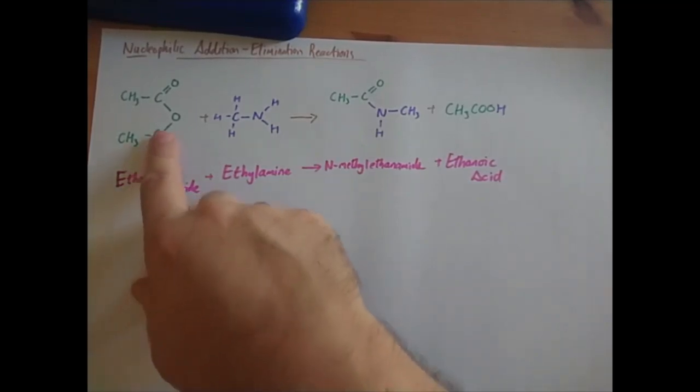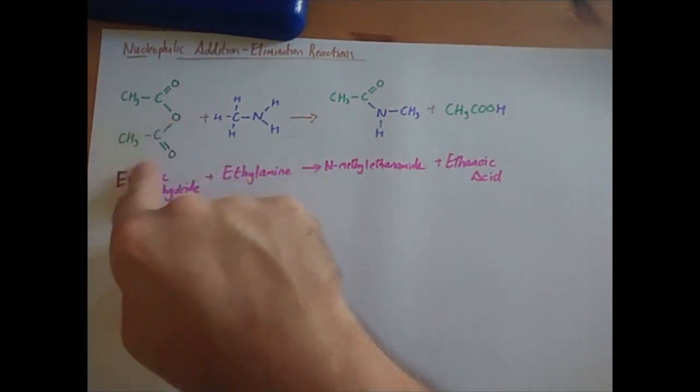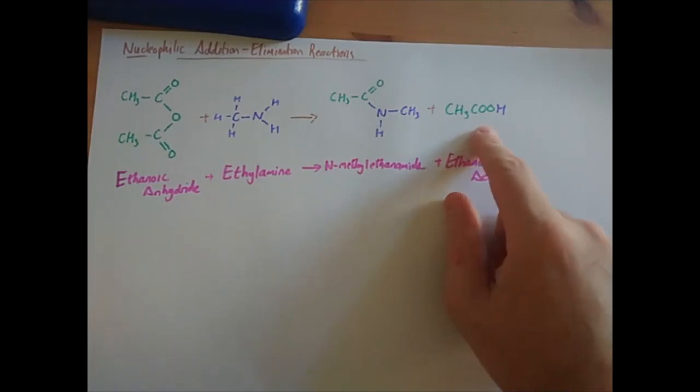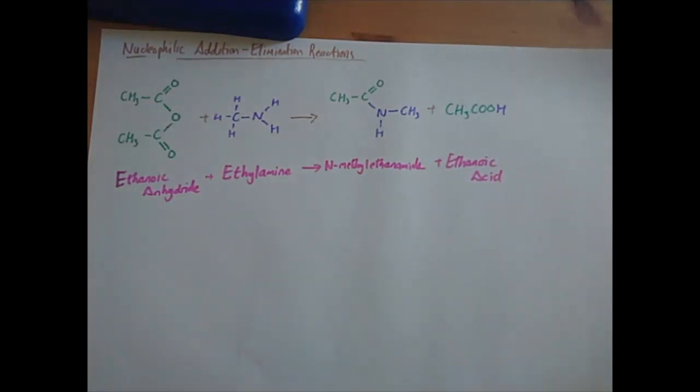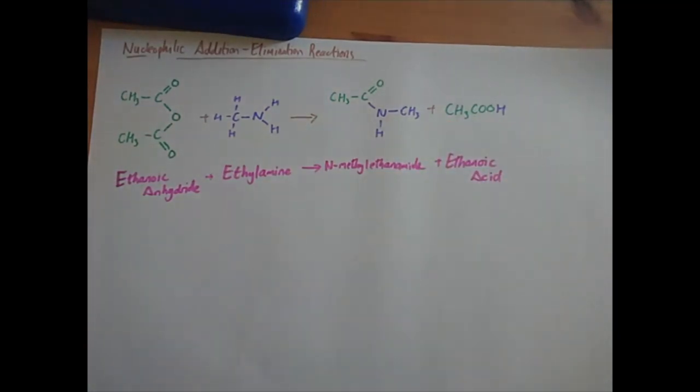The only thing that the ethanoic anhydride cares about is rather than a chlorine being lost, we lose this whole ethanoate group which then produces ethanoic acid rather than hydrochloric acid. Basically, rather than chlorine, we've got the CH3COO.